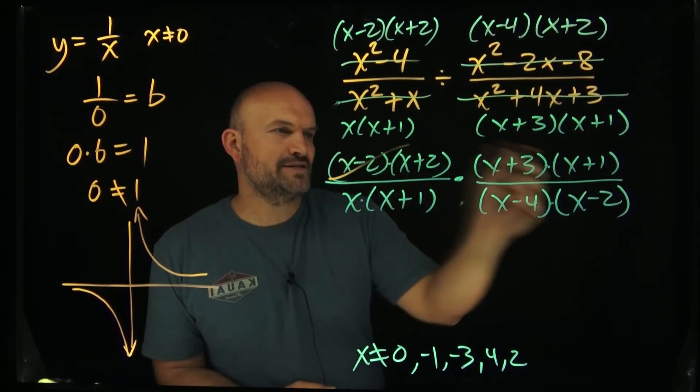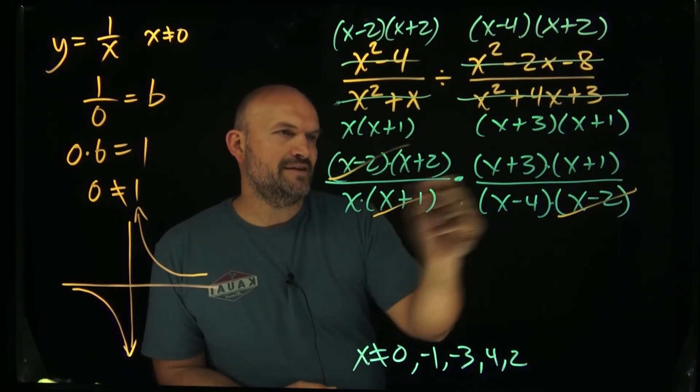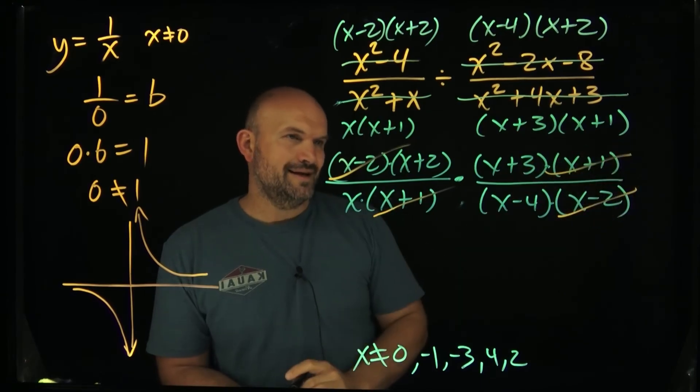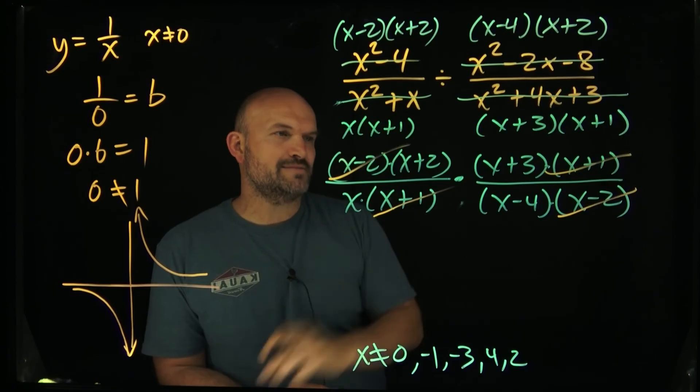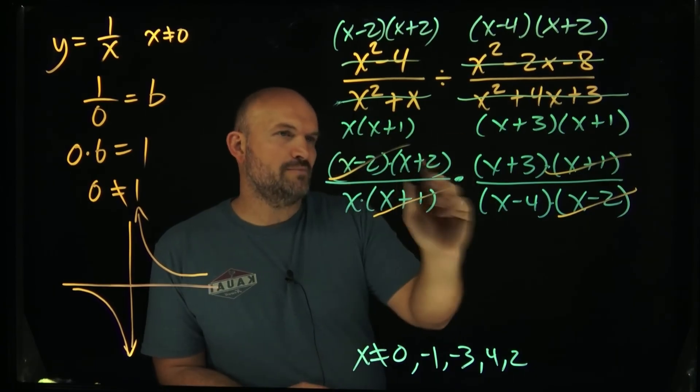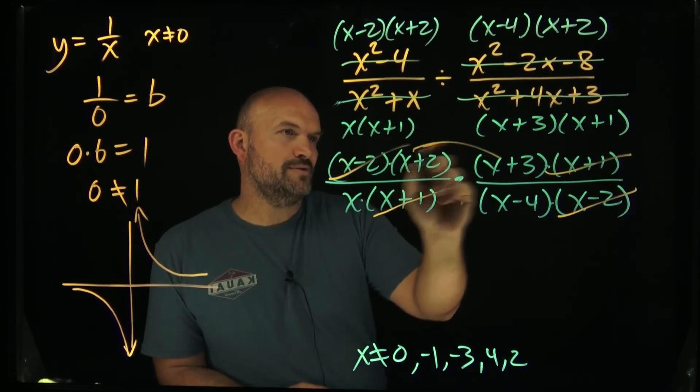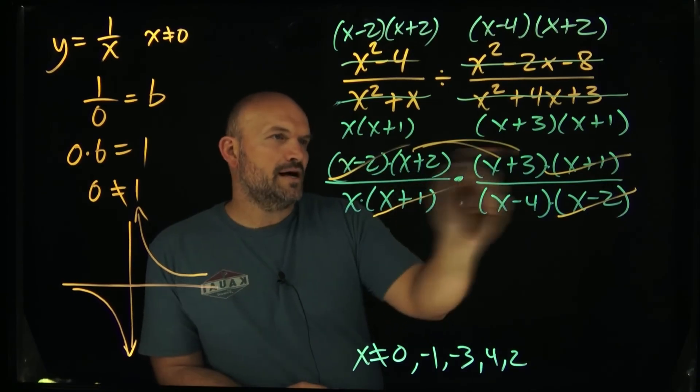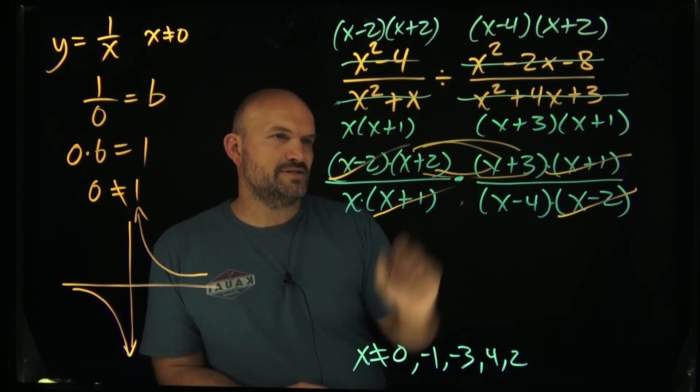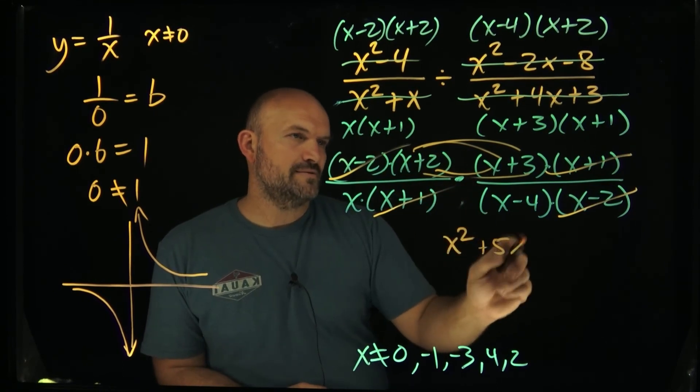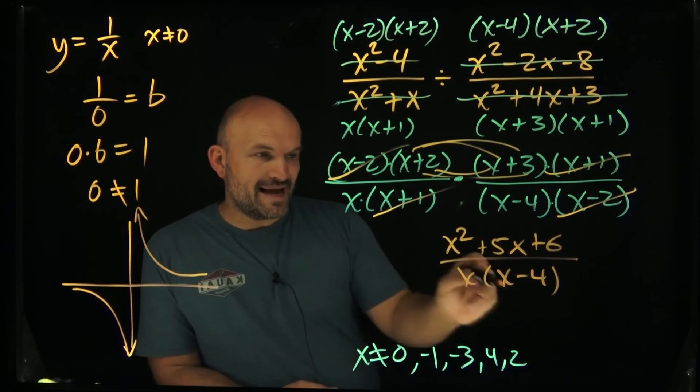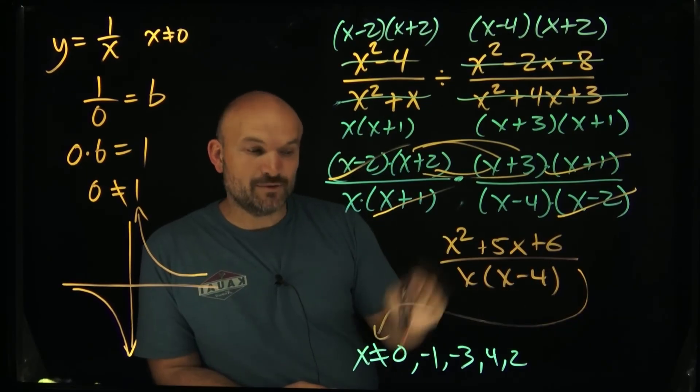Alright so let's go and see what we have here. I have an (x - 2) and an (x - 2), I have an (x + 1) and an (x + 1), and it looks like that's it. So now I can just leave this as (x + 4)(x - 4), and then here I can go ahead and multiply that out, so it'd be x² + 5x + 6.